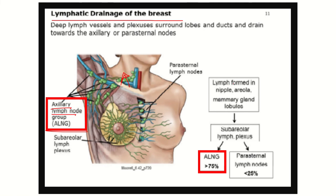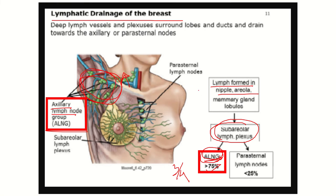Looking at the flow chart: lymph from the nipple area collects in the sub-areolar lymphatic plexus first, then drains to the axillary lymph node group, which receives about 75% — that means three-quarters of the total lymphatic drainage of the breast. About 20% drains into the parasternal, meaning the internal thoracic and posterior intercostal lymph nodes. So the axillary lymph nodes carry about 70–75% of lymphatics from the breast.